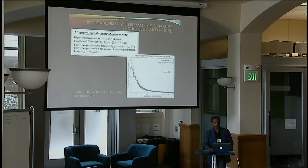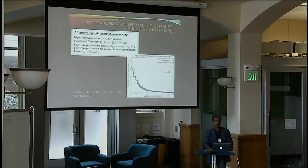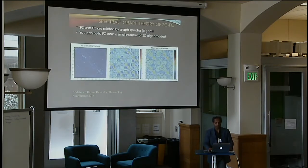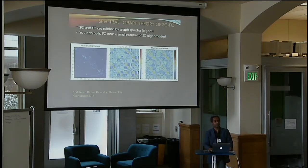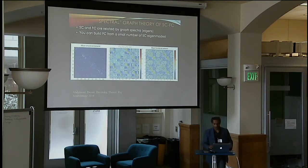Another result from the structure-function model is that the eigenvalues of the structural Laplacian and the functional connectivity must be related by an exponential decay function. We tested that on real data and found it to be the case. This also means that if you take just a few Laplacian eigenvectors, you can almost entirely rebuild the functional connectivity matrix starting from the structural connectivity matrix — finally helping connect structure and function in the human brain.